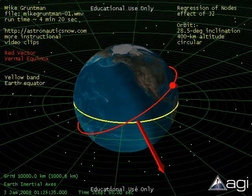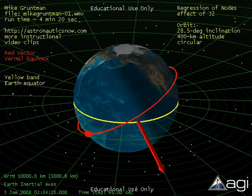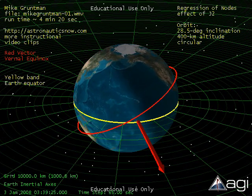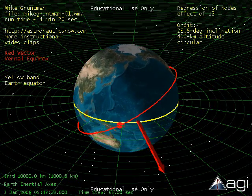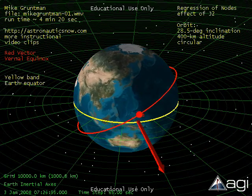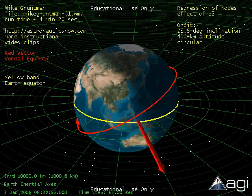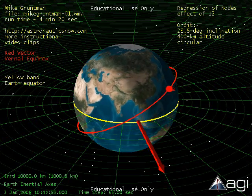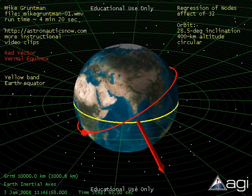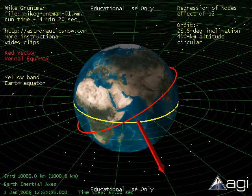The other point of the orbit where the spacecraft crosses the equator moving from north to south is on the other side of the Earth, and that point is called the descending node. The line connecting ascending and descending nodes, the line of nodes, is in the orbital plane and crosses the center of the Earth.